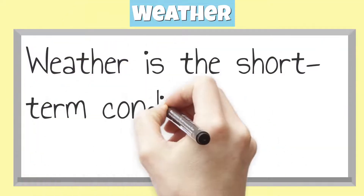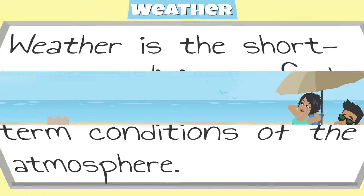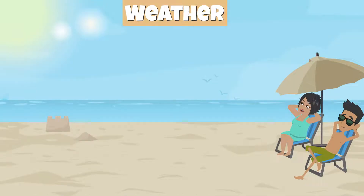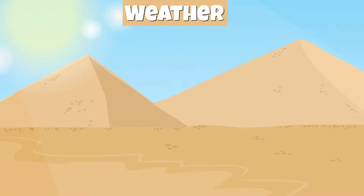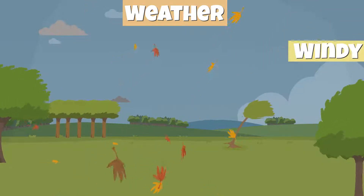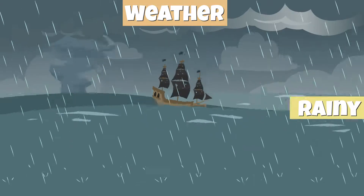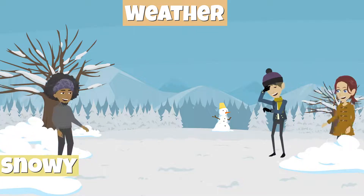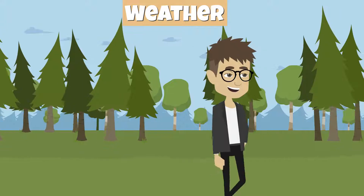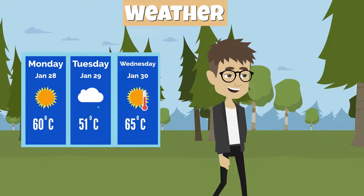Weather is the short-term conditions of the atmosphere. Some conditions of the atmosphere can be sunny, dry, windy, humid, rainy, stormy, and snowy. Weather changes from day to day.